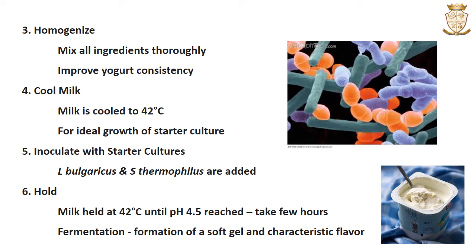Now the starter cultures are inoculated. Lactobacillus bulgaricus and Streptococcus thermophilus are added to the milk mixture. After inoculation, the milk is held at 42°C until a pH of 4.5 is reached. Fermentation results in the formation of a soft gel and there will be the development of the characteristic flavor of yogurt.